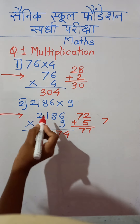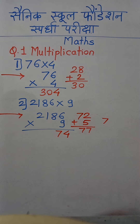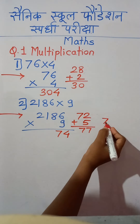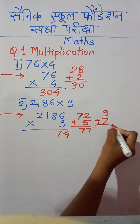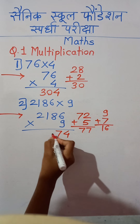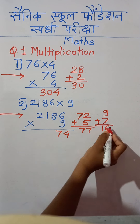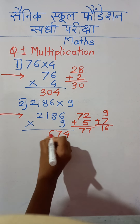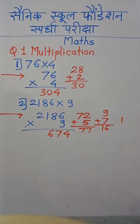Now 9 times 1: 9 ones are 9, and plus carry 7 is 16. We will not write 16 directly — we write only 6 here and 1 will be carried again.